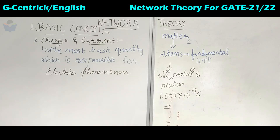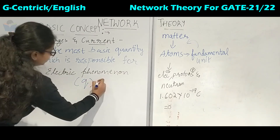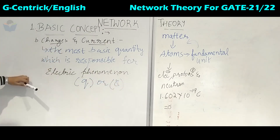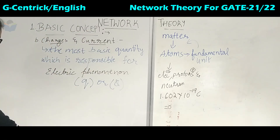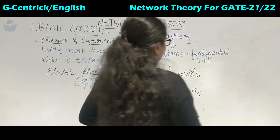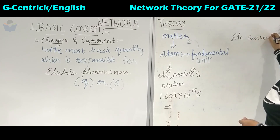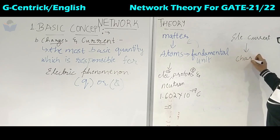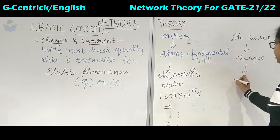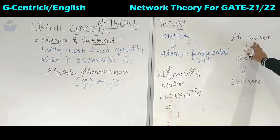We can define charge as the most basic quantity which is responsible for electric phenomena. It is denoted by q — you can denote it by small q or capital Q. Now coming to current: what is the role of charge in current? For electric current to flow, the charges responsible are electrons — these electrons are responsible for the electric current.